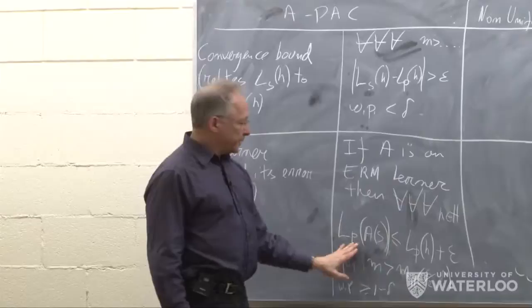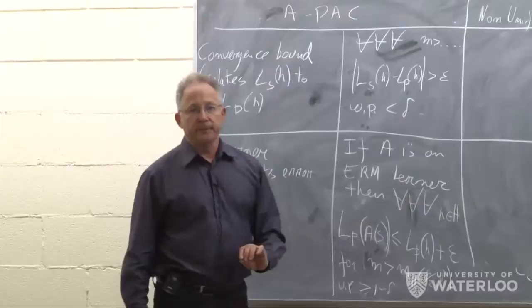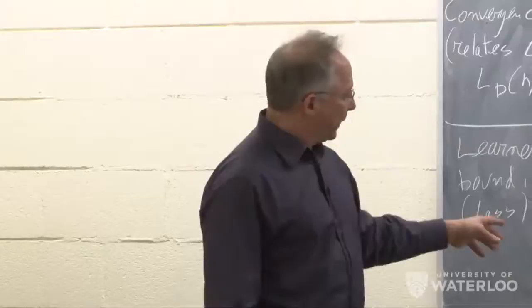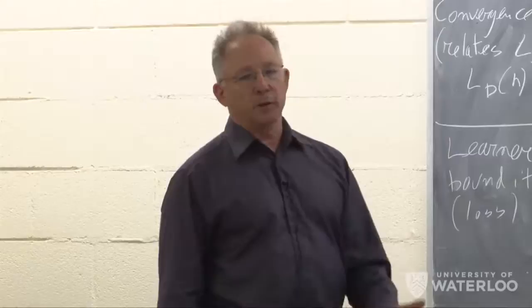This is about how the algorithm behaves. Since we had an algorithm with this behavior, we knew that the class is learnable. So now we want to repeat the same two steps with respect to non-uniform learnability. We want a convergence result, and then we want an algorithmic paradigm that will take advantage of this convergence result.